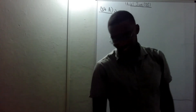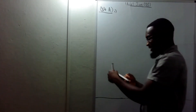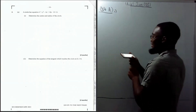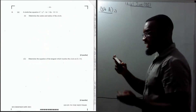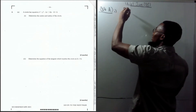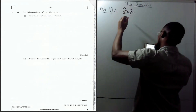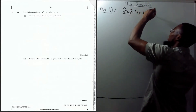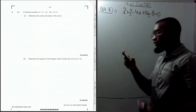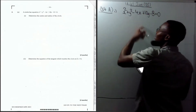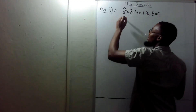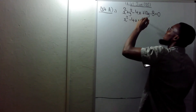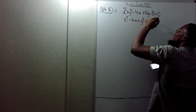We're back to do question number four. It says find the center of the circle and the radius. The circle has the equation x squared plus y squared minus 4x plus 10y minus 8 equals 0. To find the equation of this circle in standard form, first group the x terms: x squared minus 4x plus y squared plus 10y minus 8 equals 0.